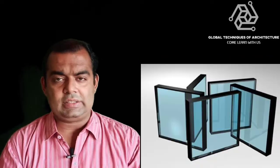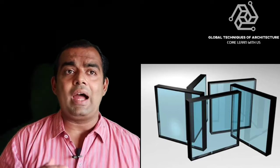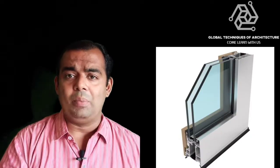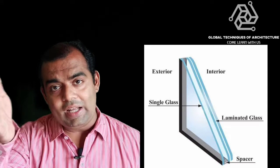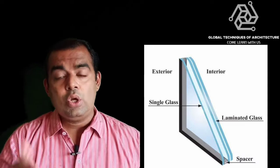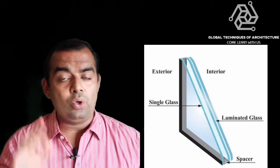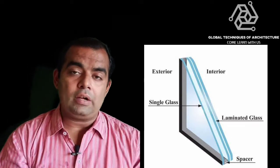We start the discussion with component number one: glass. Depending upon the budget, intent, and actual requirement of the project, the glass is selected. It can be single, double, laminated, triple, or a DGU insulated glass unit with lamination. Depending upon all these parameters, the glass selection happens.